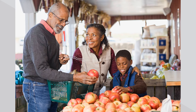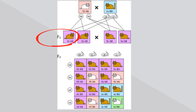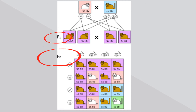Next, successive generations means one generation after another. If you look at this picture, you have the original parents, then generation F1, then generation F2. So those are successive generations.